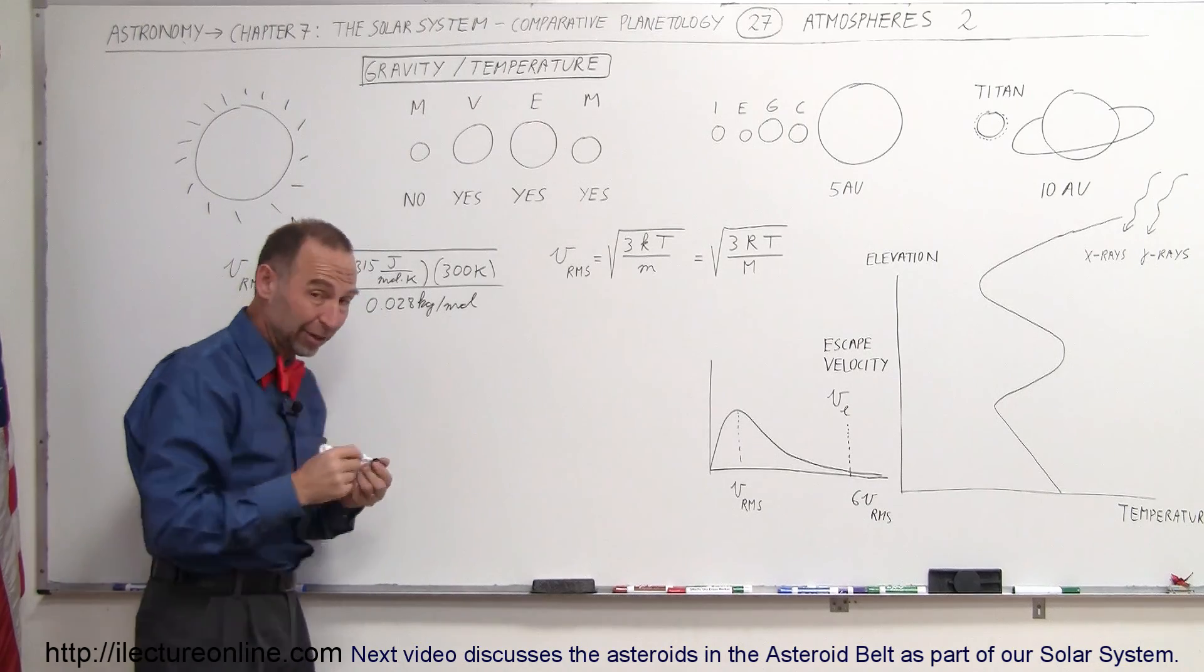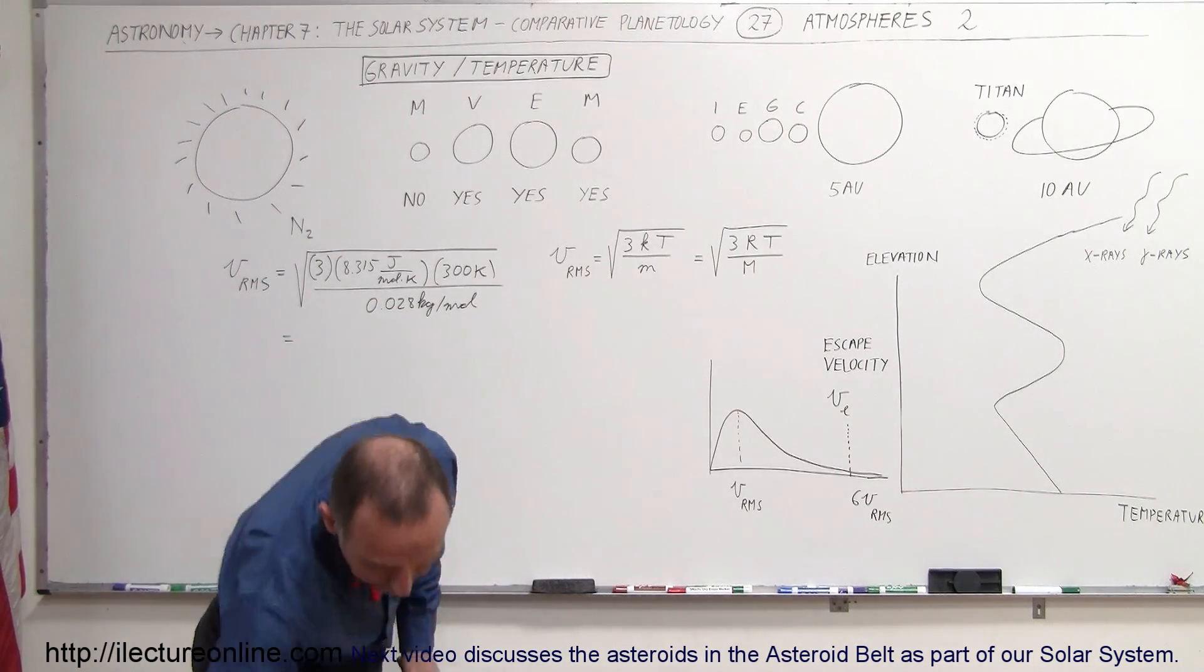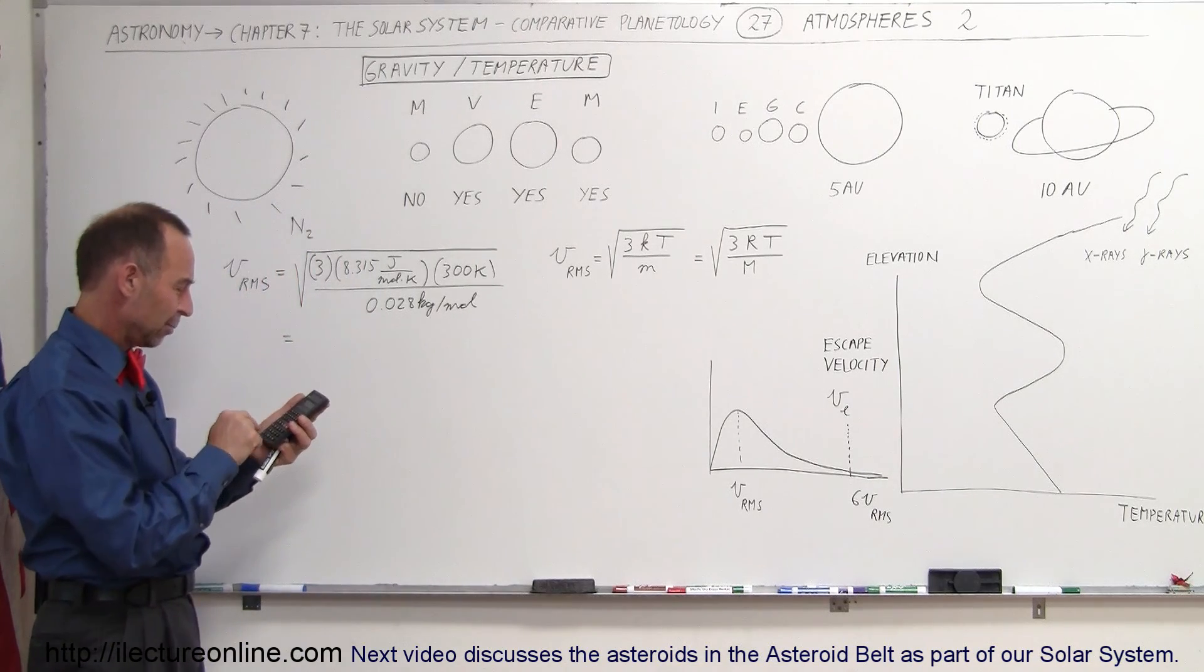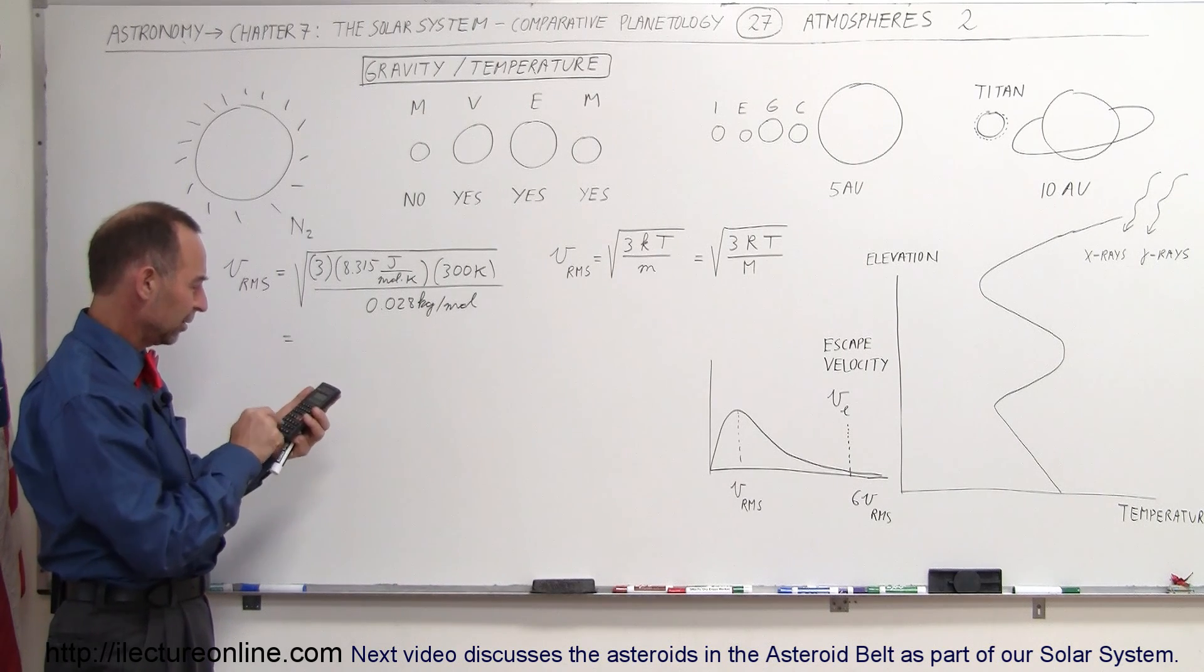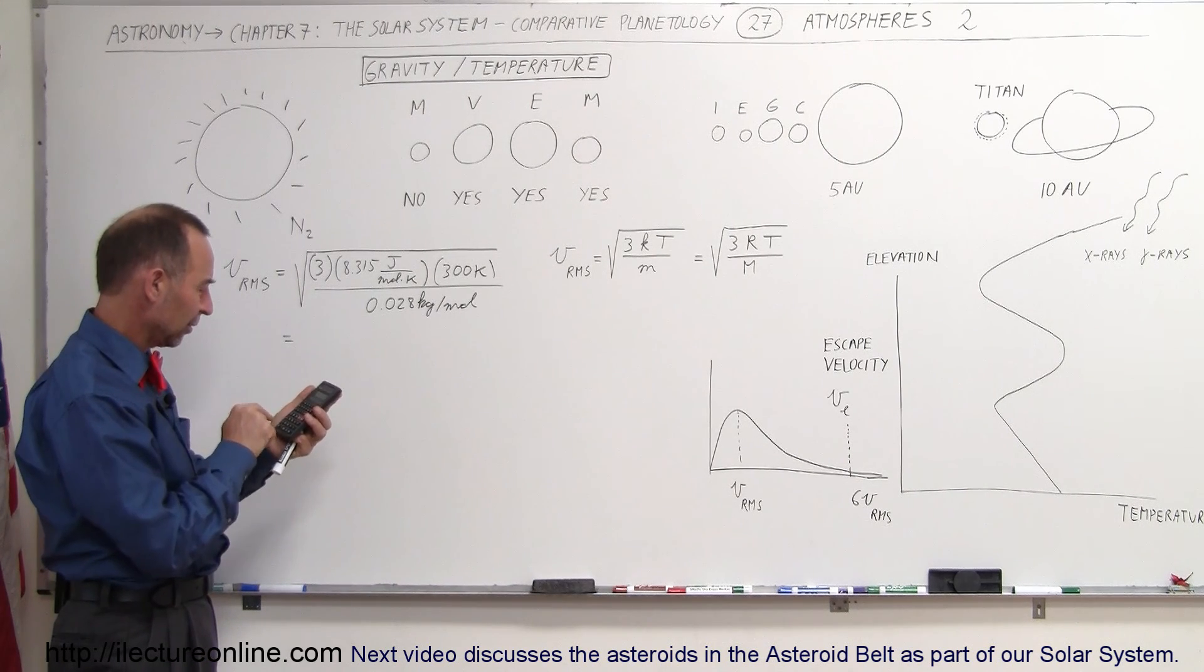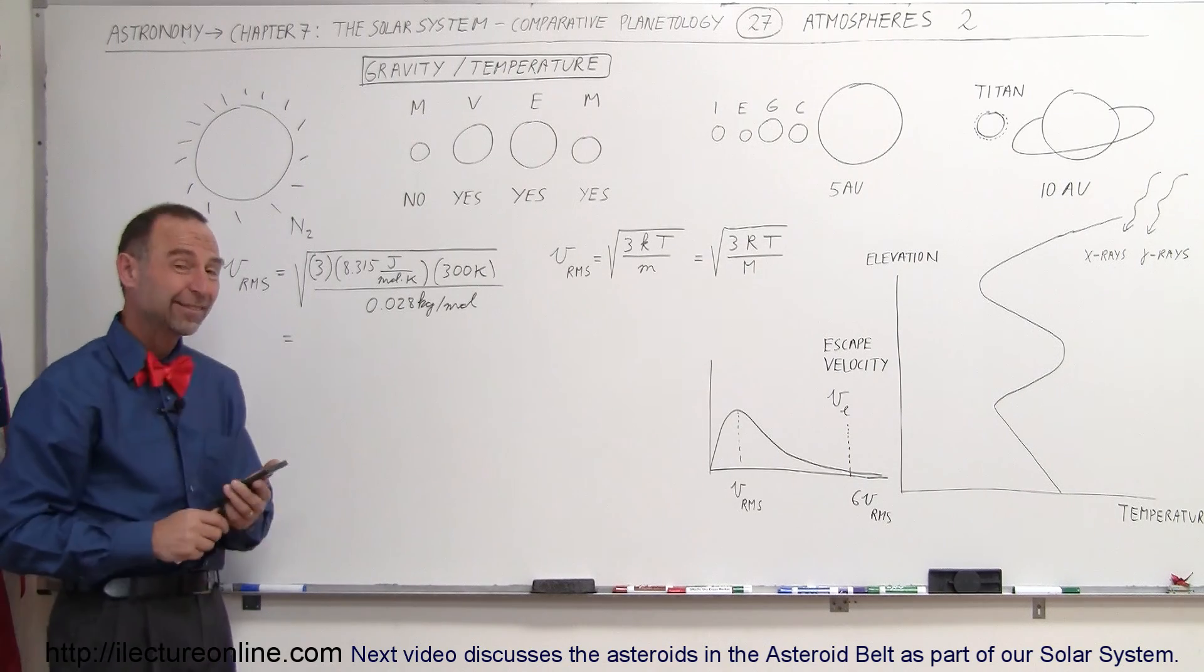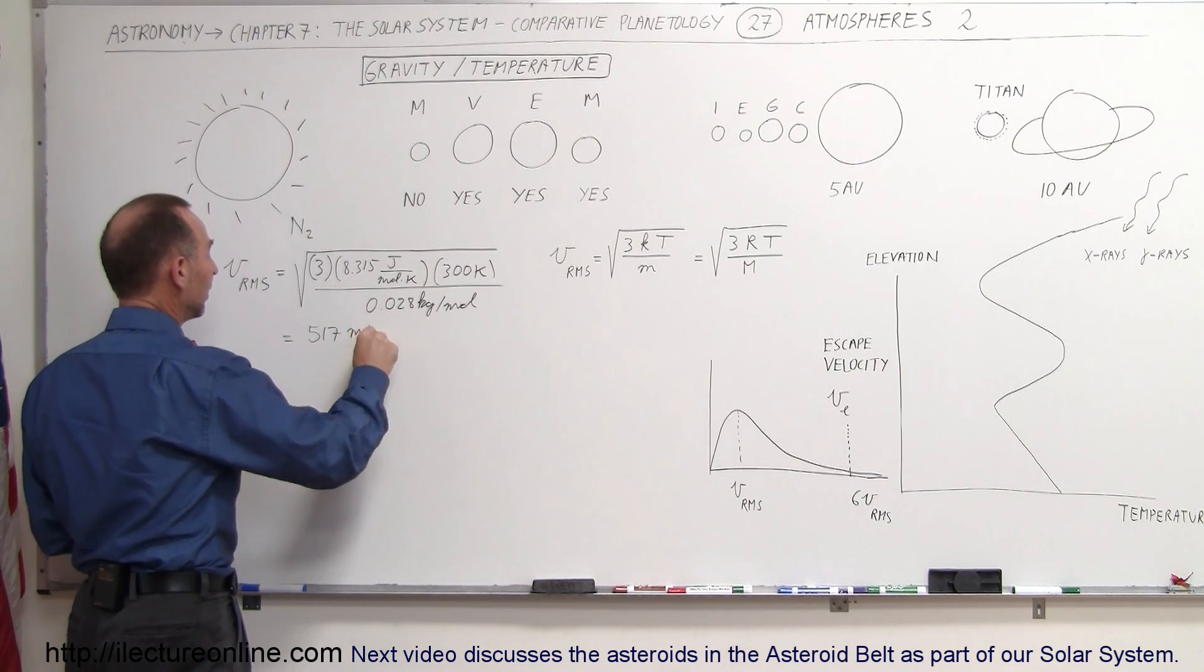With a calculator, let's find out what the typical speed is of a molecule. So, we have 3 times 8.315 times 300 divided by 0.028, take the square root of that, and it's 517 meters per second, which is quite fast.